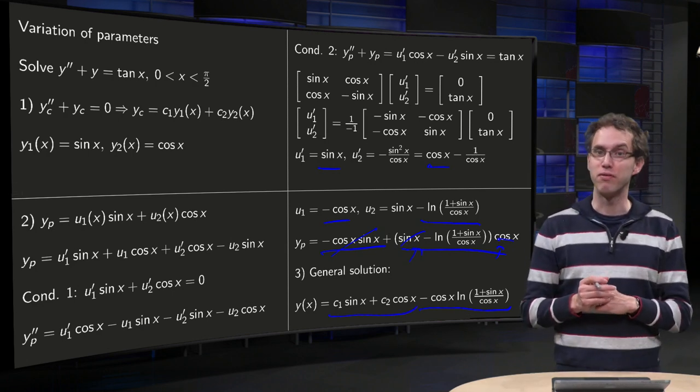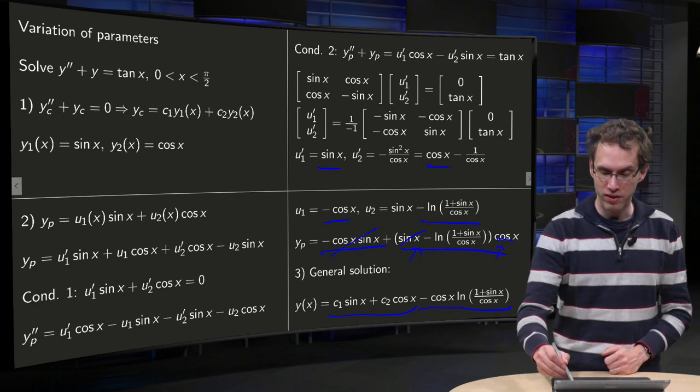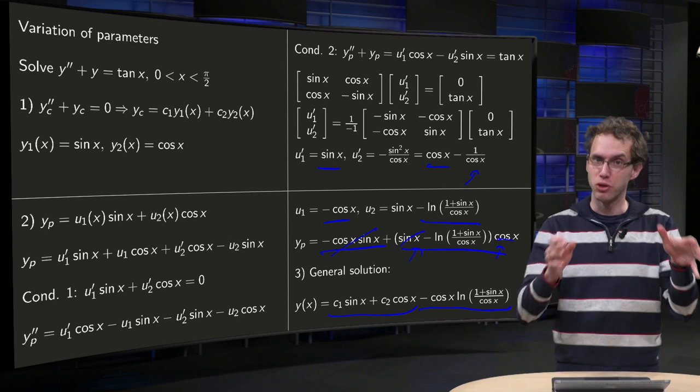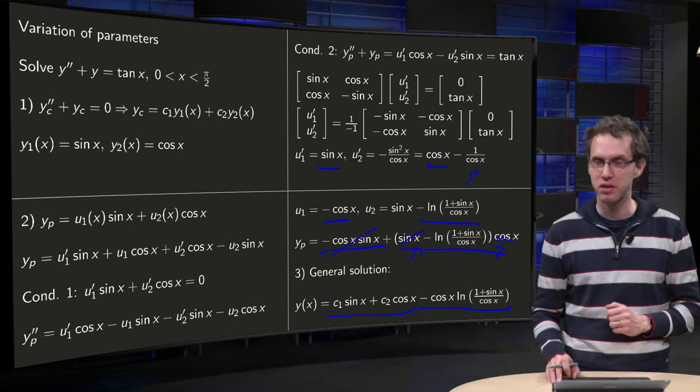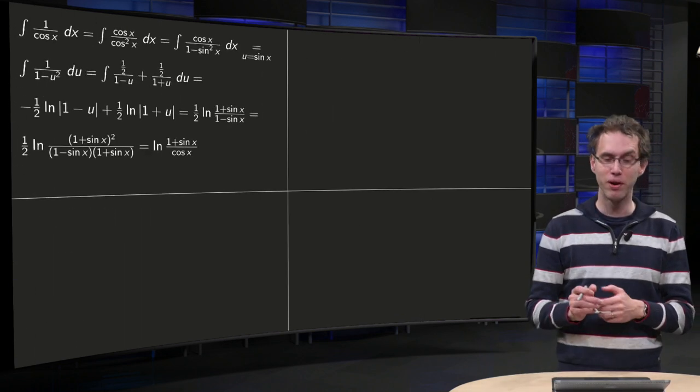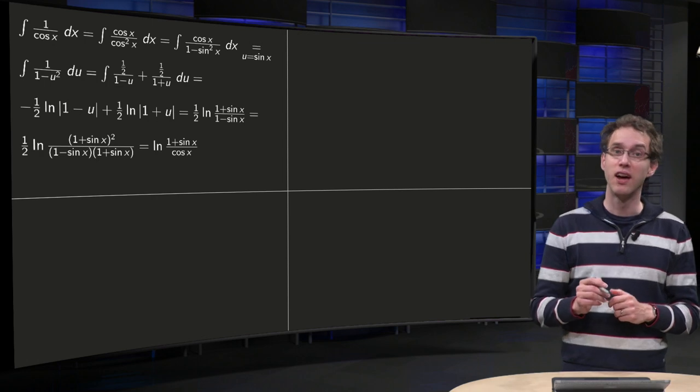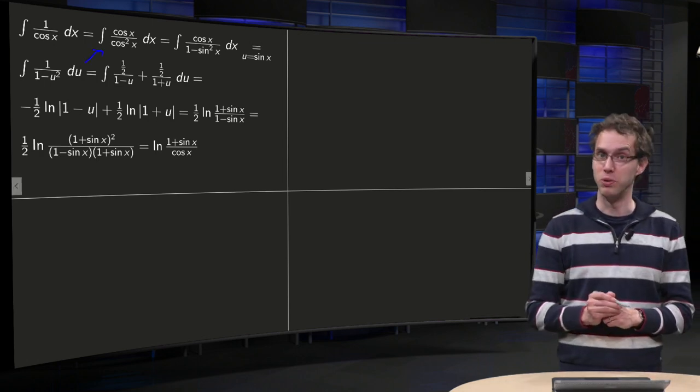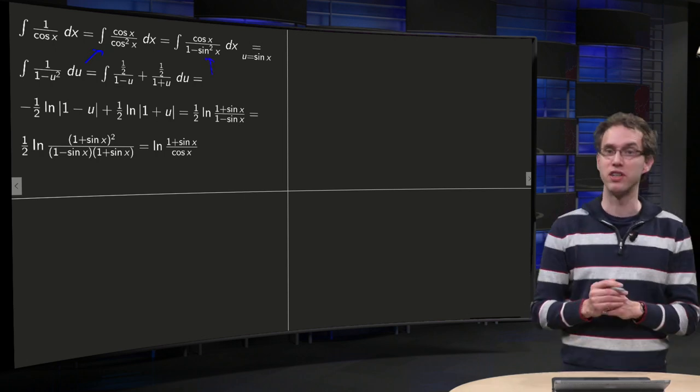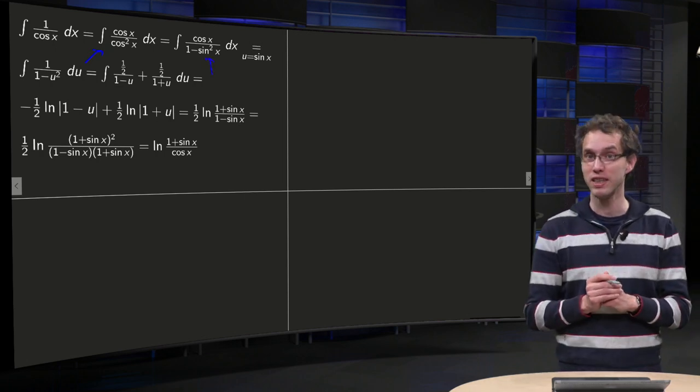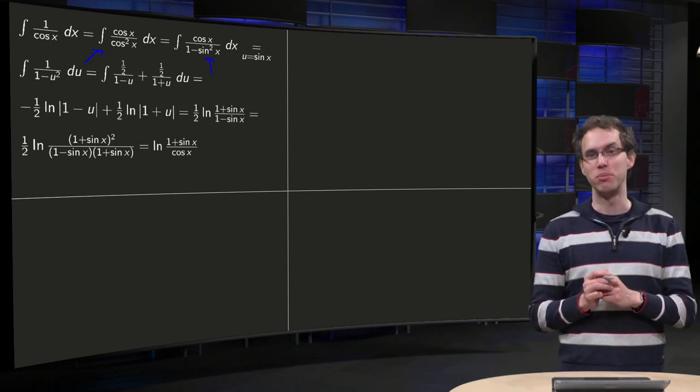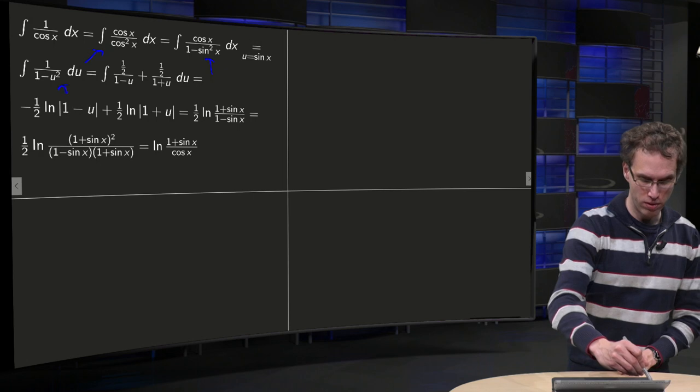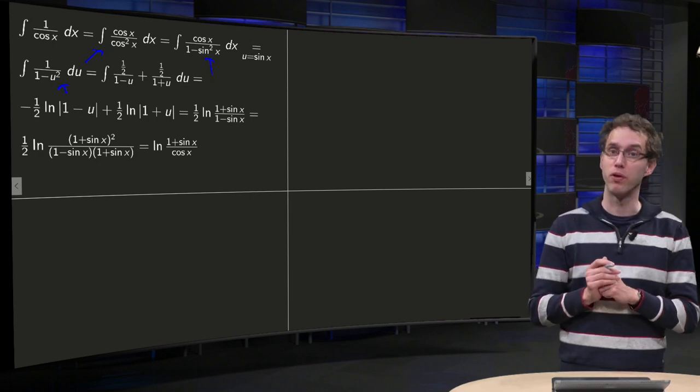So for the big fans of integrals, how did we integrate this 1/cos(x)? We have our solution now, but if you want to know how we did the integral of 1/cos(x), we have a very neat trick for that. You multiply it by cos/cos. So why would you do that? Then you turn the cos²(x) into 1 - sin²(x). And then you can use the substitution rule, u = sin(x). So you get an integral of 1/(1 - u²).